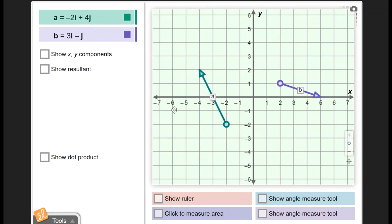We've got vector a over here, we've got vector b over here. You can grab the tail of the vector to move it around to change the position. And if you grab the head of the vector, you can change the angle.